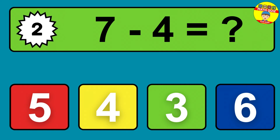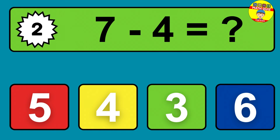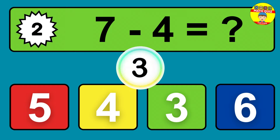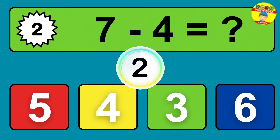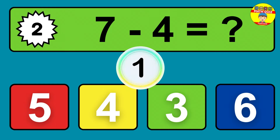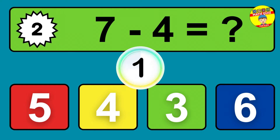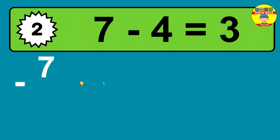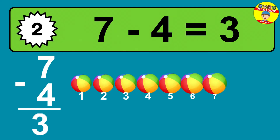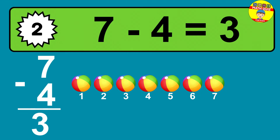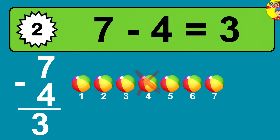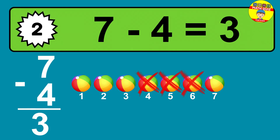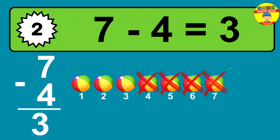Question two: seven minus four equals what? The answer is seven minus four is three. Let's count it: one, two, three.